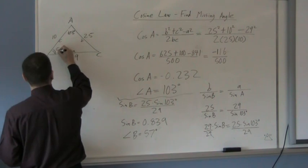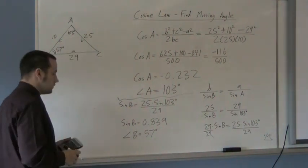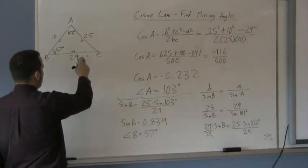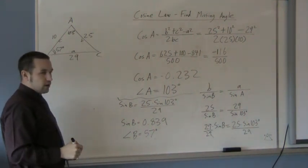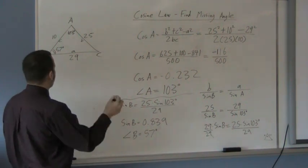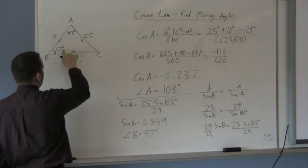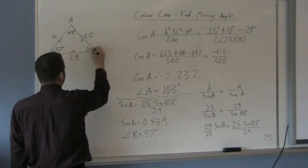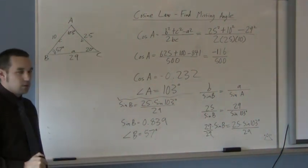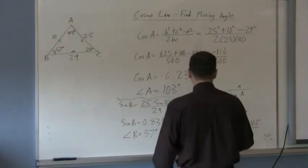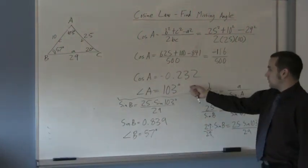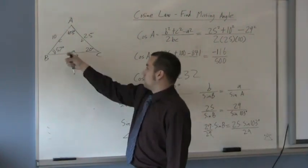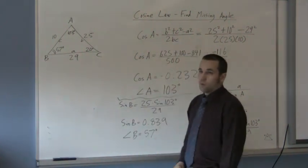Now you can get the last angle, which is the last thing that I don't know on this question, by using the angle sum of the triangle theorem. In other words, all angles in the triangle add up to 180. So 103 plus 57 is 160. Okay, so that means I have 20 degrees left for angle C. And now you've solved the whole triangle. Okay, and once again, it's your preference after you've got here and you've solved for this angle, whether you use the sine law or the cosine law to solve for either one of these. Either one will work.